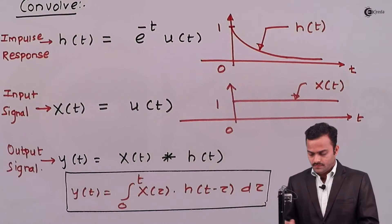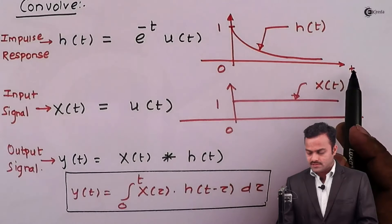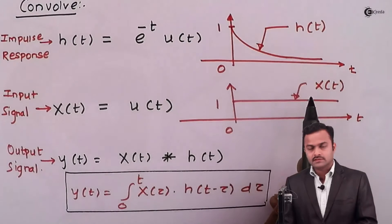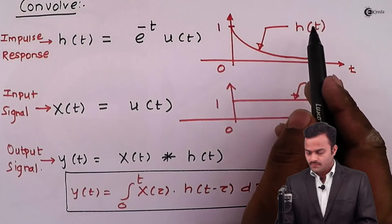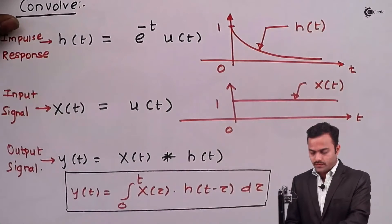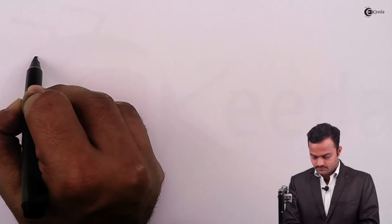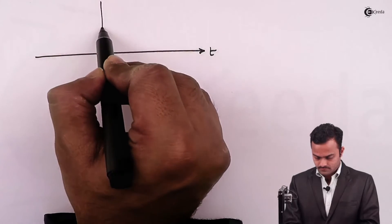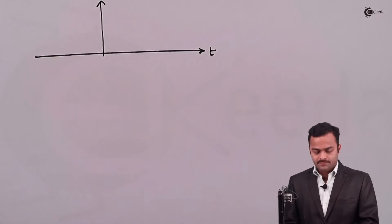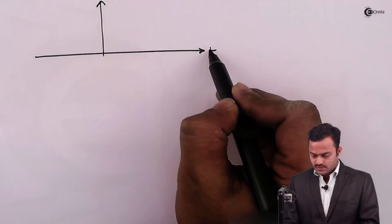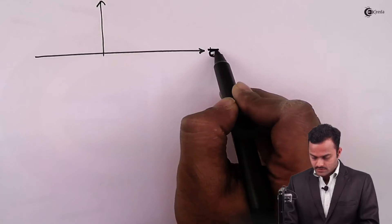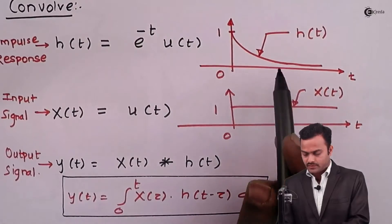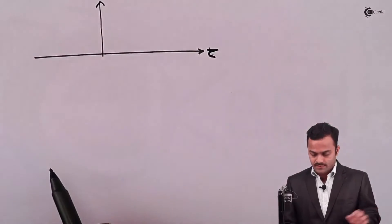The first step is replacing t by tau. At the same time we will also do a time reversal of h(tau), so we will get a signal h(-tau). We are keeping x(tau) as it is and only taking the time reversal of h(tau).